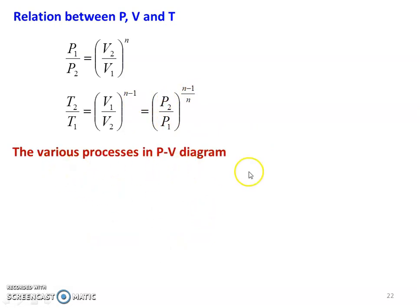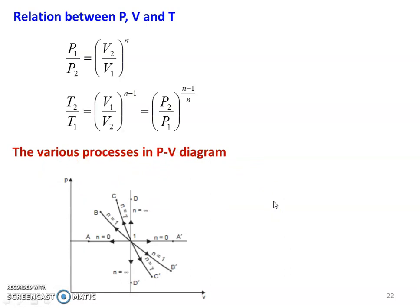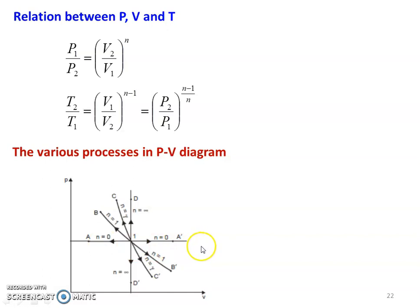Various processes on the PV diagram: considering PV to the power N equals constant - when N equals infinity, the process is constant volume (vertical line); when N equals zero, it is constant pressure (horizontal line); when N equals gamma, it is the adiabatic process (curve C-C'); when N equals 1, it is the isothermal process (curve B). So B is isothermal process, C is adiabatic process, A is constant pressure process, and D is constant volume process.